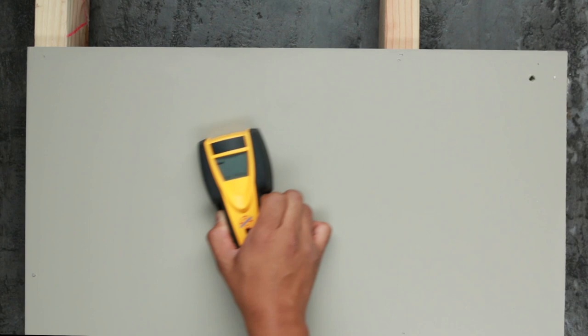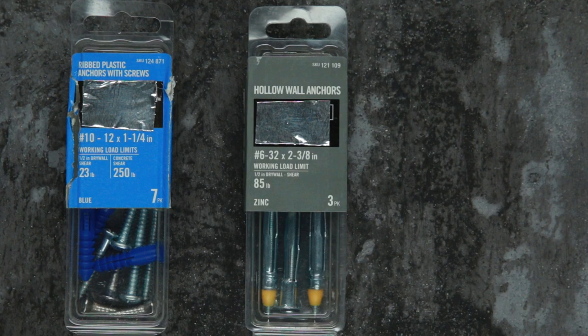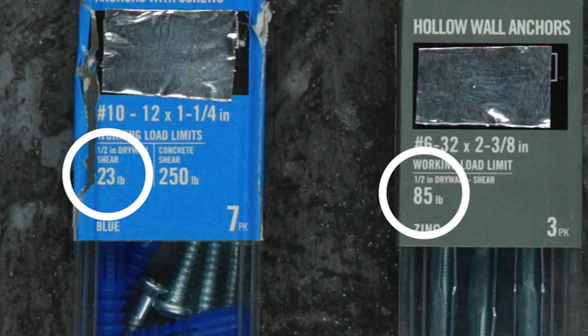Drilling into the stud of the wall is always the best option, especially when you're hanging something heavy, but you don't always have that luxury. Drywall anchors come in a variety of different options and weight capacities. Depending on what you need, some anchors make more sense. When choosing an anchor, always check the packaging for its weight capacity.